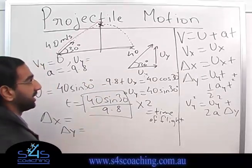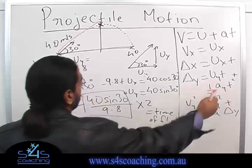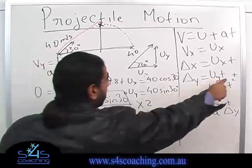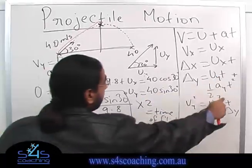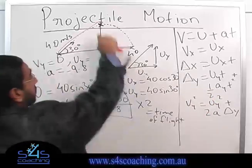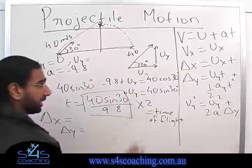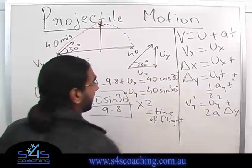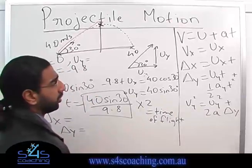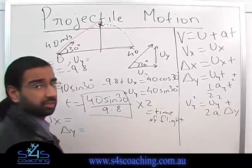So we can actually put that in this equation. We have uy, which is here. We have the time, which we found. Ay is negative 9.8. Again, it's going up, acceleration is pulling it down. And then we have t squared. So we can actually find delta y as well.